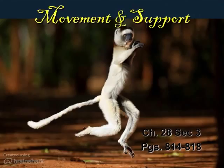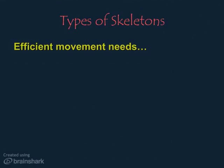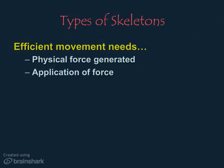In order to move, animals use very different structures that work in similar ways. Animals need to move with efficiency and not waste precious energy. To move efficiently, all animals must do two things.